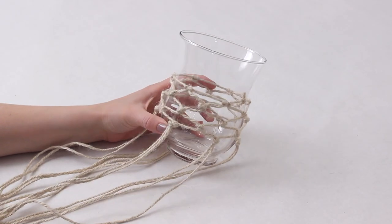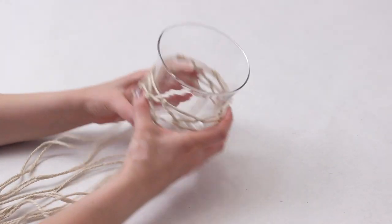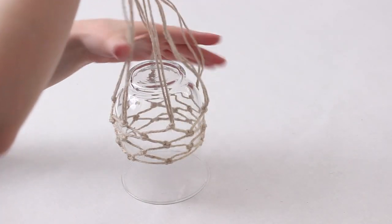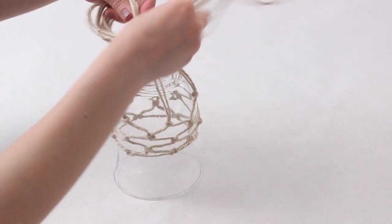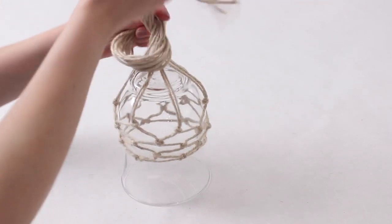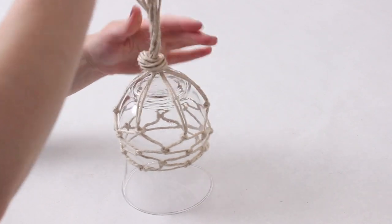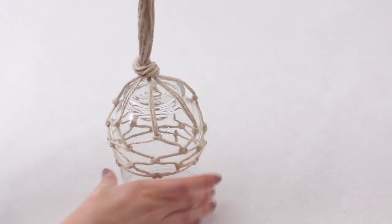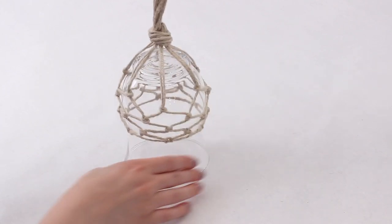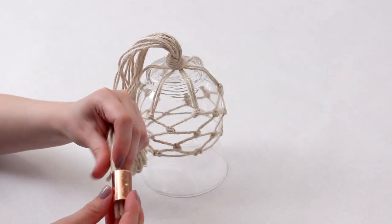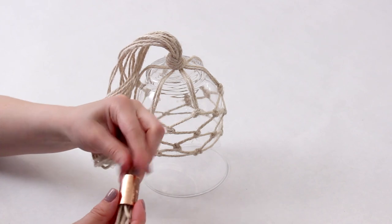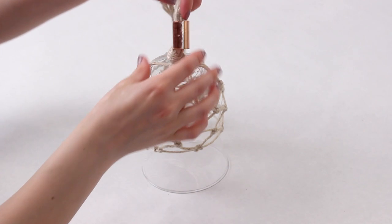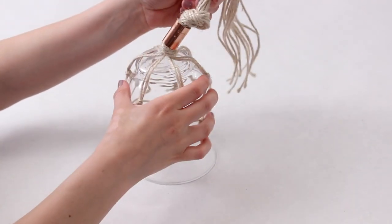Once you're happy with how that looks you can just flip the jar over and then gather up all the loose ends of string and tie one big knot at the bottom to keep everything nice and secure. Then I decided to take this little piece of copper that I had and slide it onto my string because I wanted to give it a little bit of an embellishment so I just took that and slid it onto the ends of my string and let it rest on that knot that I just made and then the last step is to make another knot so that that won't slide off.